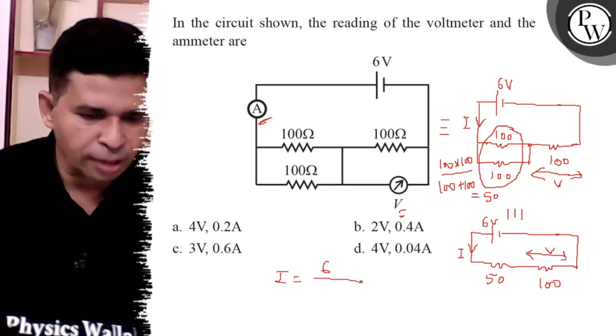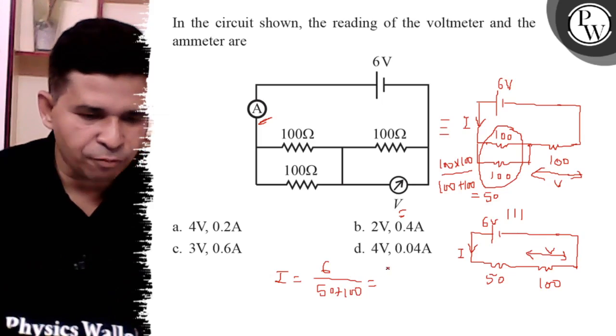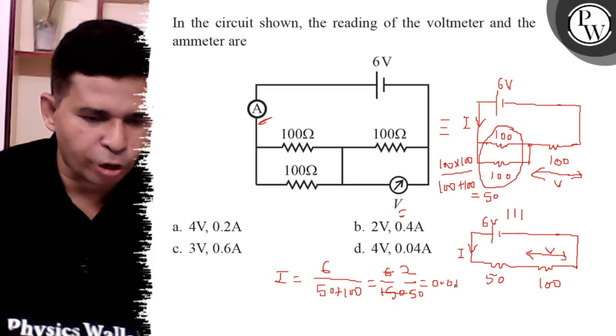I is what? 6 upon 50 plus 100, so it is 6 by 150, so it is 2 by 50, so it is 0.04 ampere.